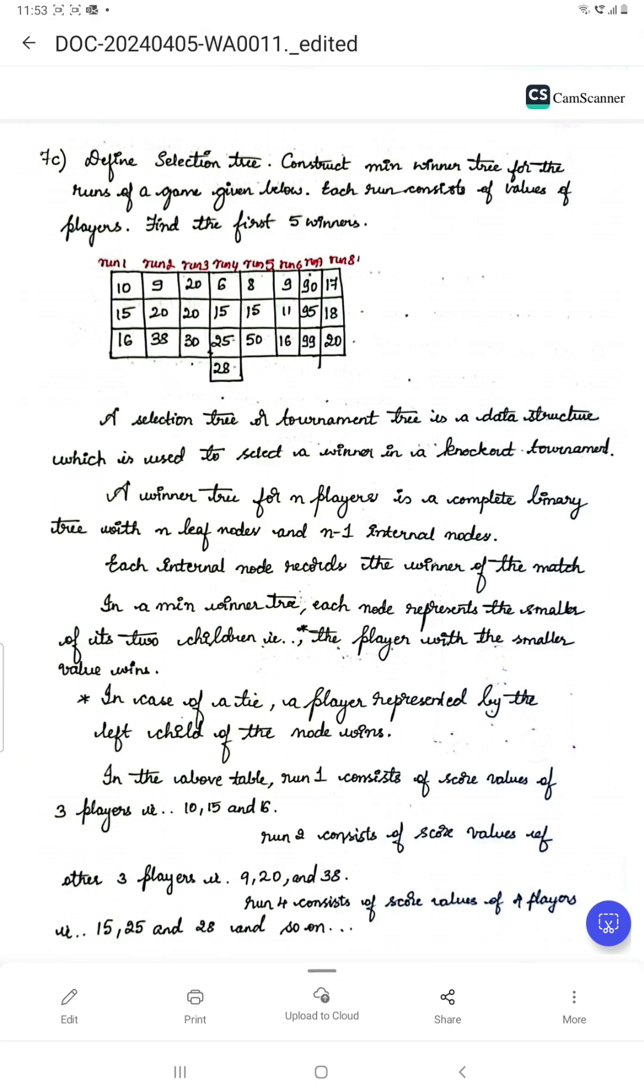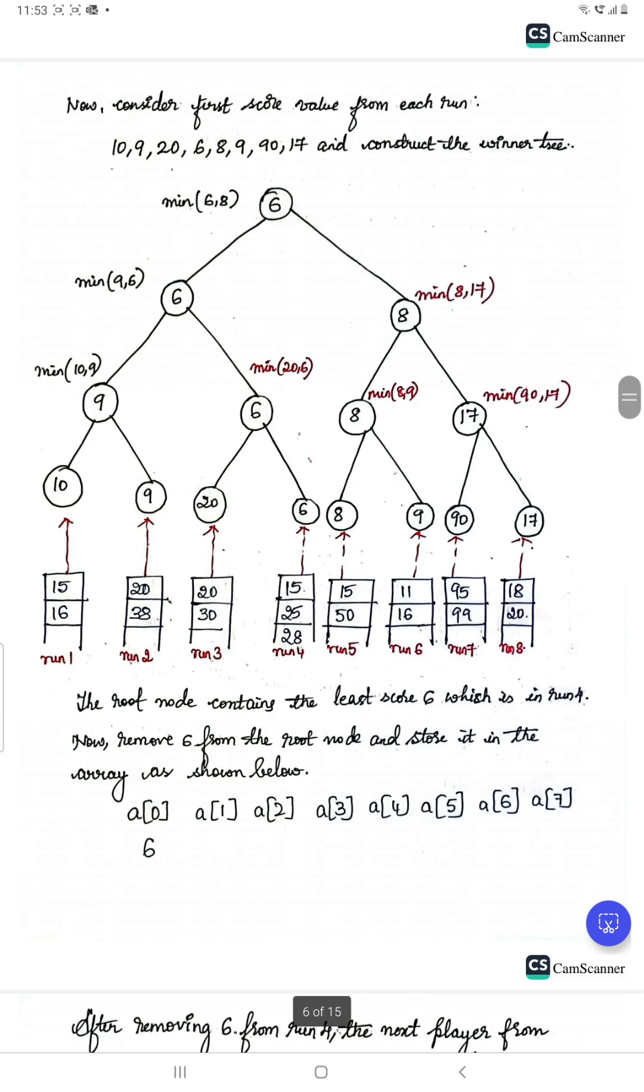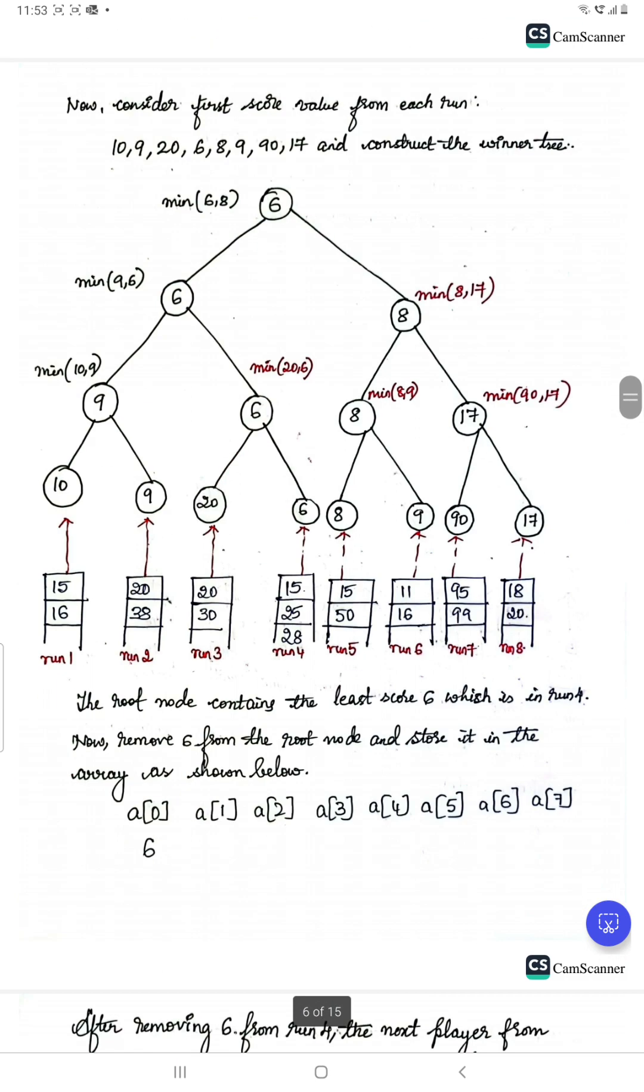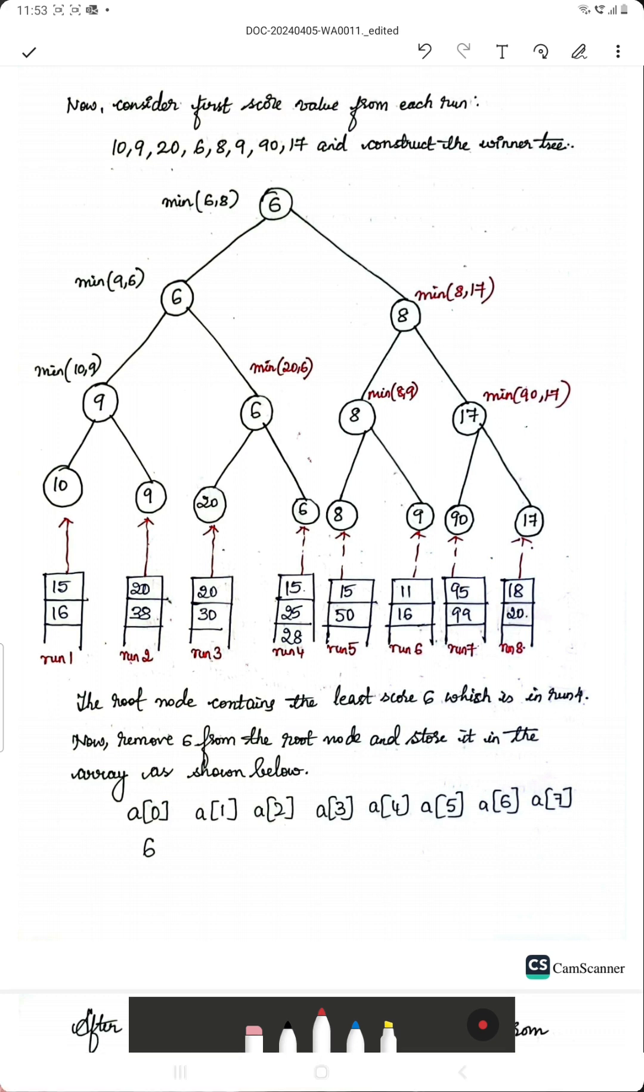A winner tree for n players is a complete binary tree with n leaf nodes and n minus 1 internal nodes. They have given the runs: run 1, run 2, run 3. I have taken in the table format like this in the notes which I have shared. Now, in the given tree first I have to consider by taking the first row values. The given values I will write it in this format.